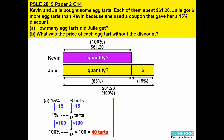Moving on to part B. Since we want to calculate the price of each egg tart without the discount, we calculate based on Kevin's $61.20. Kevin did not have 40 tarts — Kevin actually has 40 minus 6, which is 34 tarts. So the price of each tart is $61.20 divided by 34, which gives us $1.80.